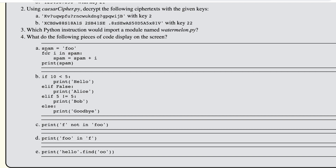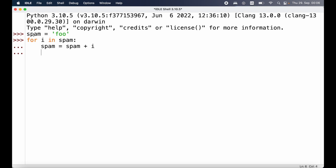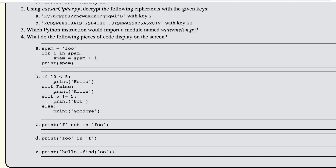Next we have code sections to evaluate. What do the following pieces of code display? In the first case we have a variable spam set to the string 'foo', and then we iterate over each character inside of spam, updating the string by adding each character to the end. We would start with 'f', then add 'o', then the second 'o', so by the end we would have 'foofoo'. Let's try running this in the interactive shell — we specify the variable, run the for loop, print spam, and we see foofoo displayed.